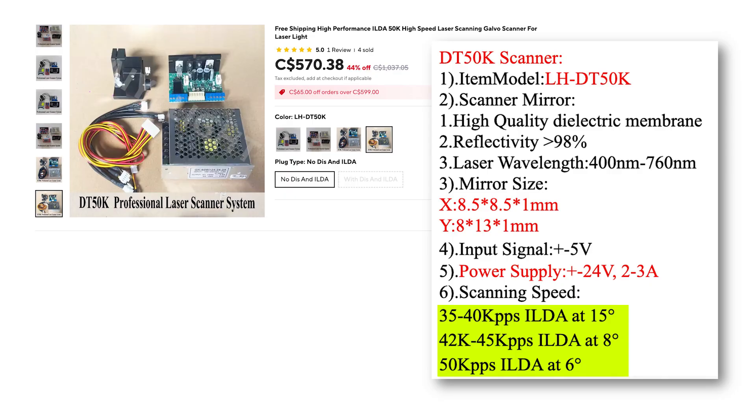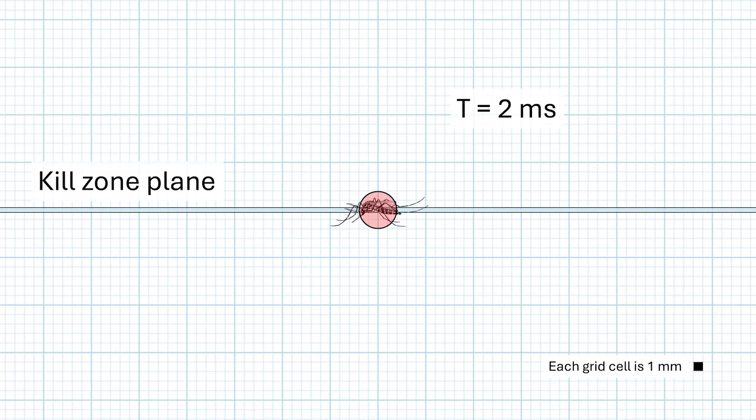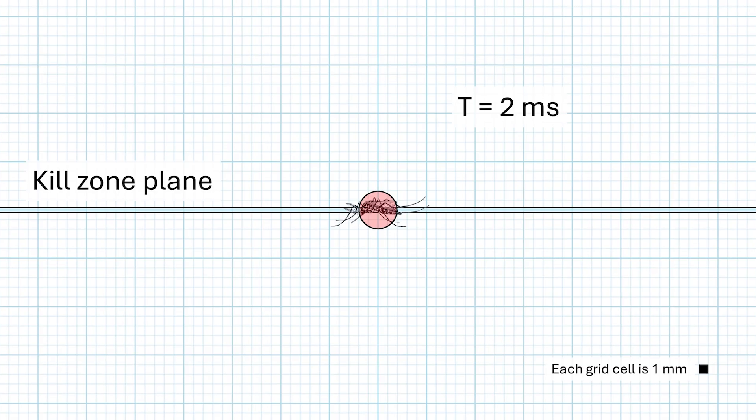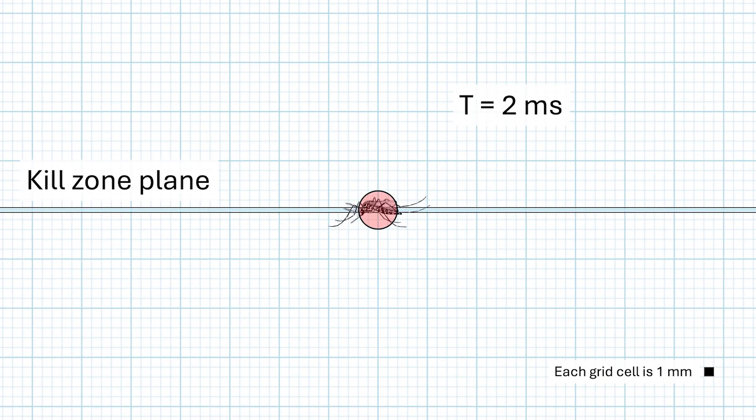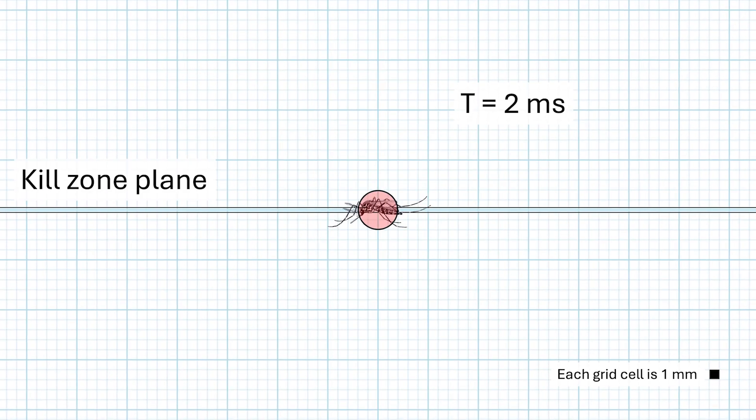Now that we've talked about galvanometer capabilities, we need to talk about the laser killing step of the process. Let's assume that we've been able to find and lock onto the spot where the mosquito is within 2ms. We now have less than 2ms to kill the mosquito. Thankfully we have some pretty good research on how much laser power it takes to kill a mosquito. Before we get into this, I'll just say that while I think the first step of finding the mosquito is next to impossible with a galvanometer, I think there is a chance that you can kill the mosquito within 2ms.